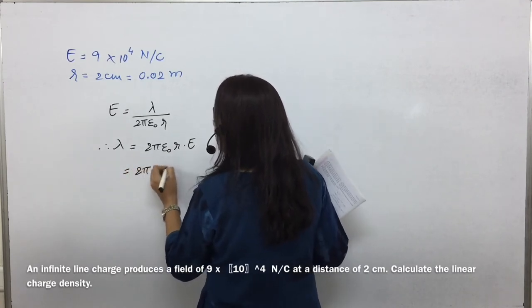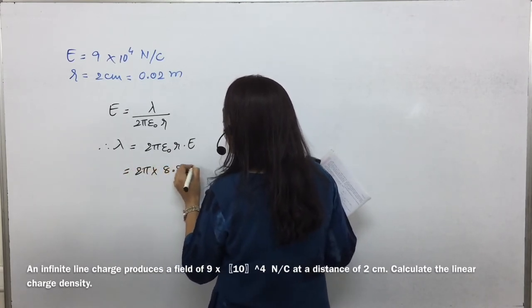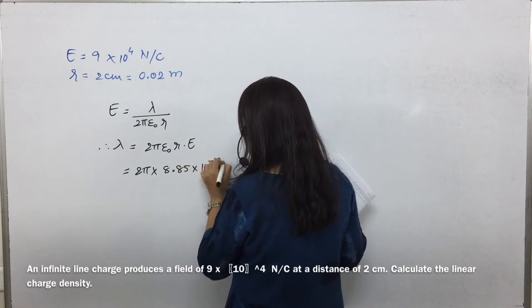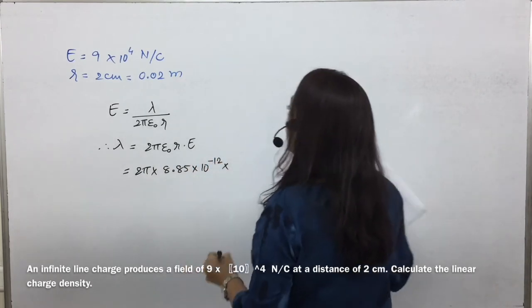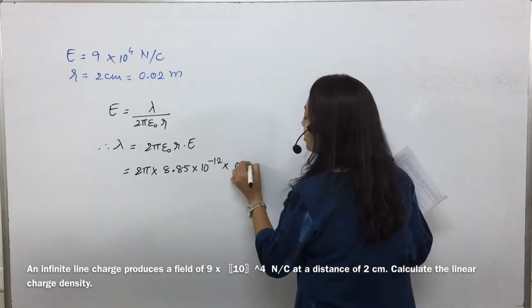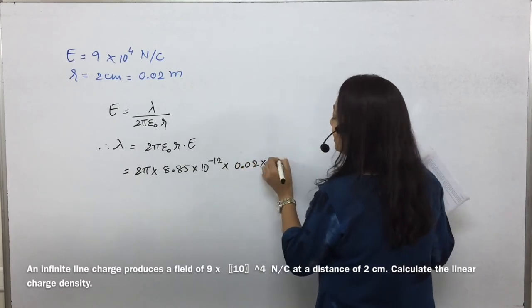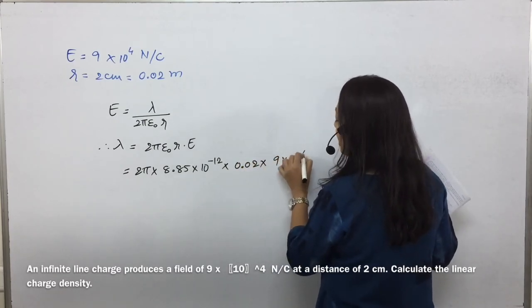So, 2π epsilon₀ is 8.85 × 10⁻¹² into r is 0.02 into E is 9 × 10⁴.